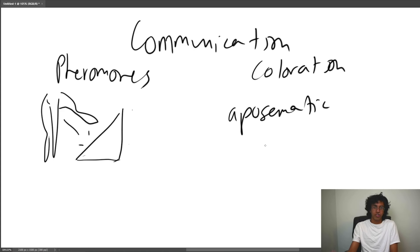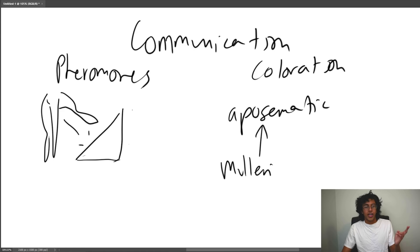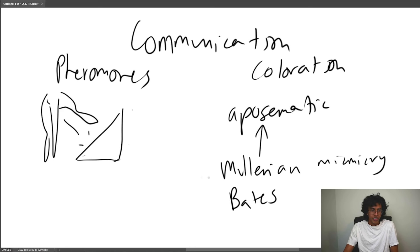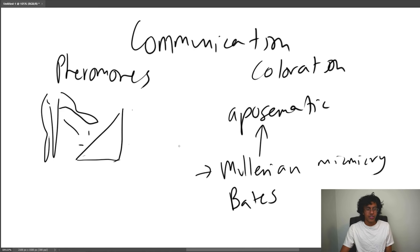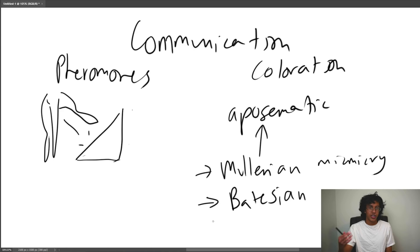Aposematic coloring is also an example of Müllerian mimicry — two dangerous animals mimic each other's warning colors so predators learn to avoid them both. There's also Batesian mimicry, where a harmless animal mimics a dangerous one to avoid predation — the harmless species pretends to be dangerous so nothing attacks it.